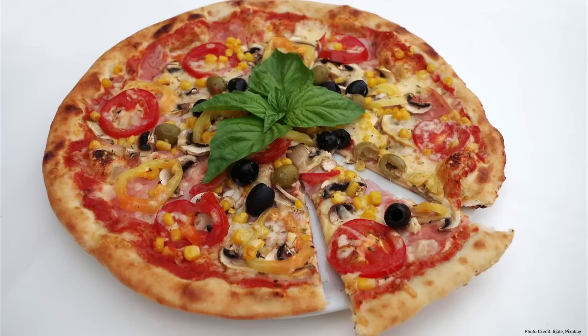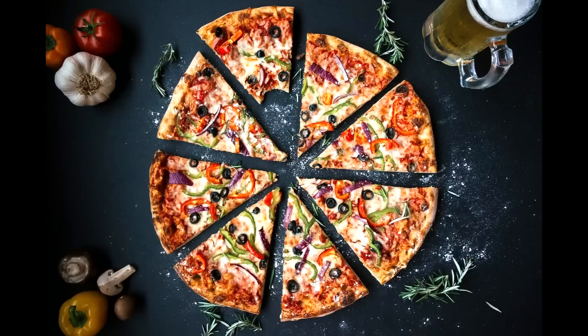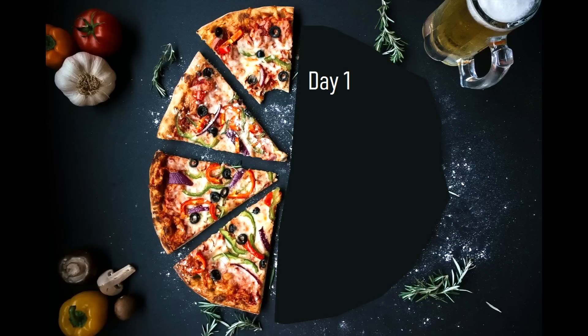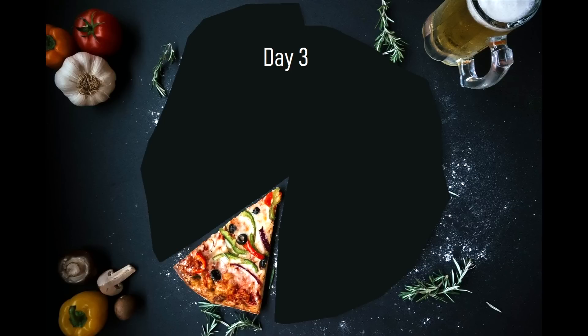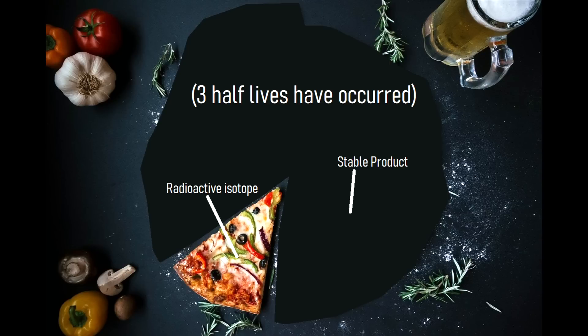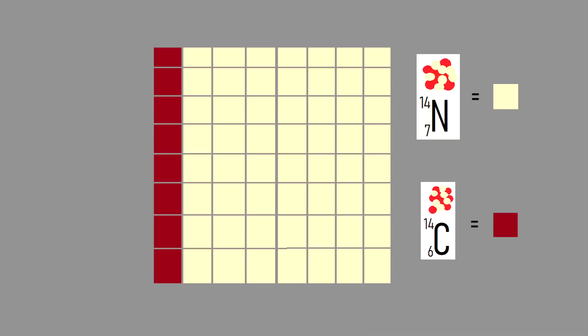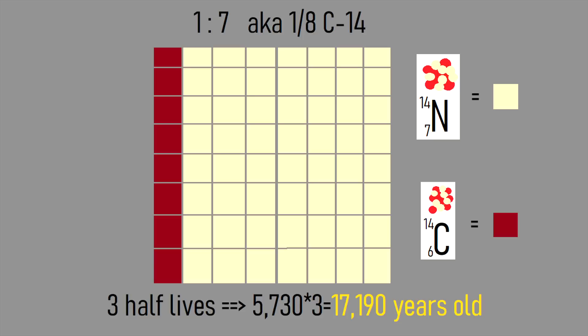Another way of visualizing this: imagine that you have a pizza which arrived at your house an undetermined number of days ago. At the end of every day, something eats half of the remaining pizza, and the radioactive pizza stabilizes to air after it is eaten each day. So if you open the pizza box and see that one eighth of the pizza is left, it must have been there for 3 days. The same logic applies to carbon-14. If the ratio of carbon-14 to nitrogen-14 is 1 to 7, it implies that 3 half-lives have passed since the organic product was formed, totaling 17,190 years.